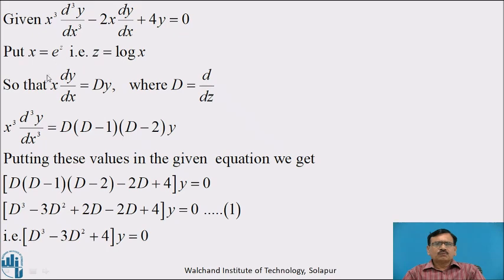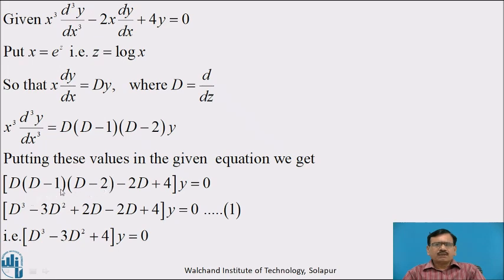To solve the homogeneous equation, we put x equal to e raised to z, that is z is equal to log x, so that x dy by dx is equal to Dy, where D stands for d/dz, and x cubed d cubed y by dx cubed is equal to D(D minus 1)(D minus 2) of y. Putting these values in the given equation, we get D(D minus 1)(D minus 2) minus 2D plus 4 of y equal to 0.